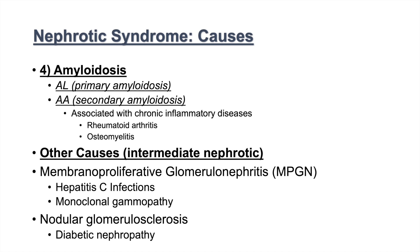Some other causes of nephrotic syndrome include amyloidosis — there can be primary and secondary amyloidosis leading to renal amyloidosis, with secondary amyloidosis often associated with chronic inflammatory diseases such as rheumatoid arthritis and osteomyelitis. There is also membranoproliferative glomerulonephritis, which can be related to hepatitis C infections and monoclonal glomerulopathies, and nodular glomerulosclerosis, which is often secondary to diabetic nephropathy. These conditions tend to present as an intermediate nephrotic syndrome with a mixture of proteinuria and hematuria.